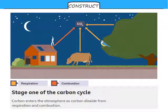The yellowish arrows are carbon dioxide that's being released as respiration, and the orange arrows are carbon dioxide that's being released as a result of combustion or burning. Stage one of the carbon cycle: carbon is regularly being put into the atmosphere as carbon dioxide as a result of respiration and combustion.